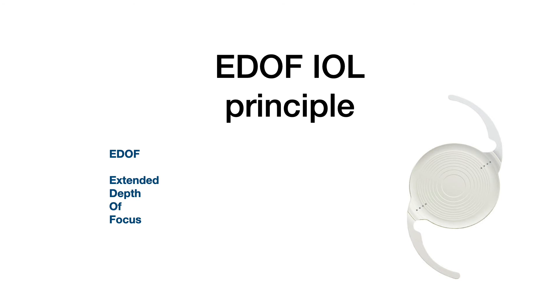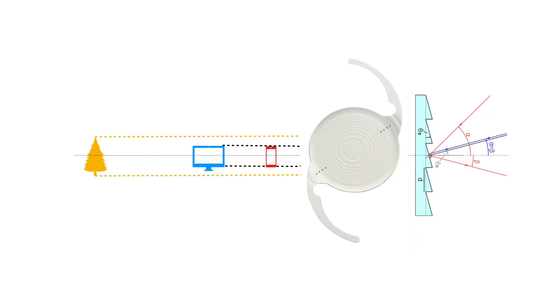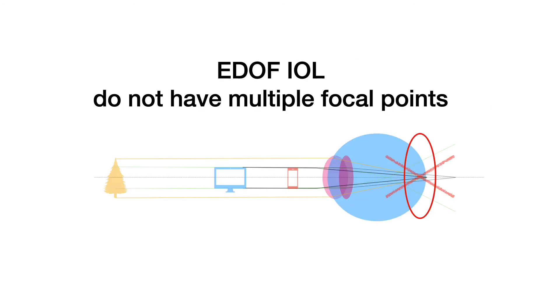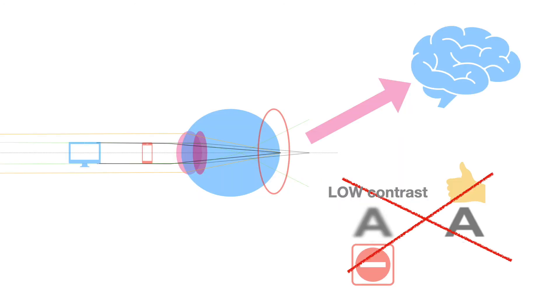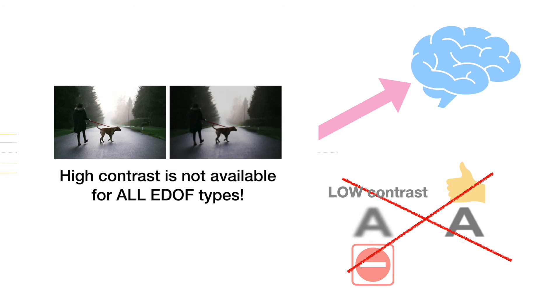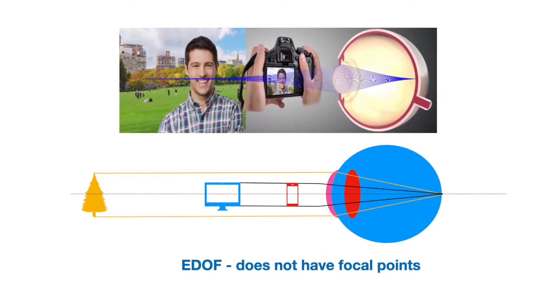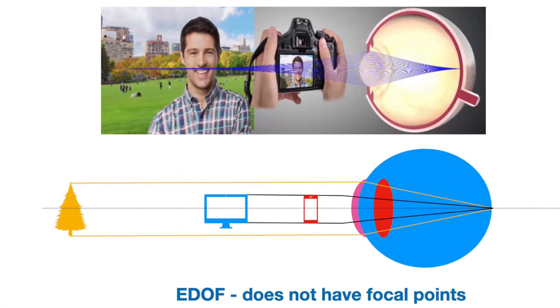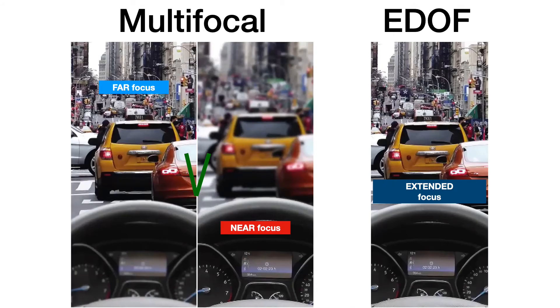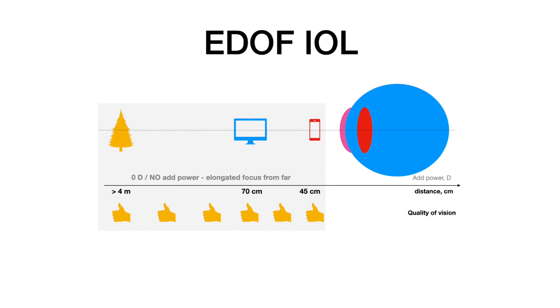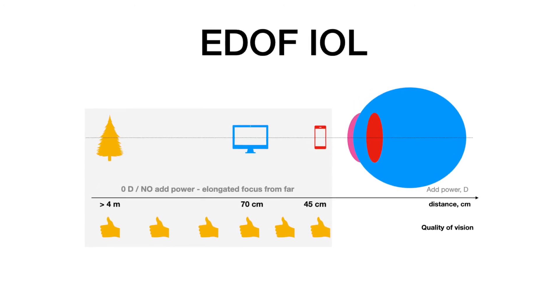There is another type of IOL on the market — so-called EDOF, or Extended Depth of Focus IOL — designed to resolve these issues. EDOF lens looks similar to a multifocal lens, but its grating works in a different way. EDOF IOL does not have multiple focal points, so your brain does not need to adapt to different types of images or deal with lower contrast sensitivity. Instead, it creates an elongated focal point which projects the whole area in front of you into one sharp focal point on the retina, with no gaps between focal points and a sharp, clear range from far to near.